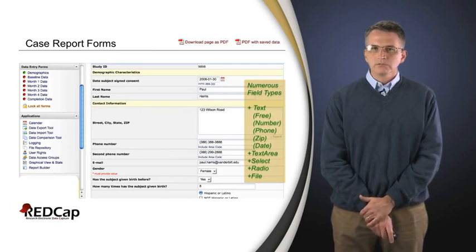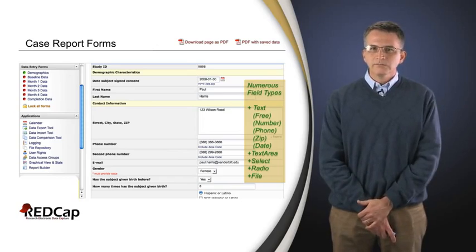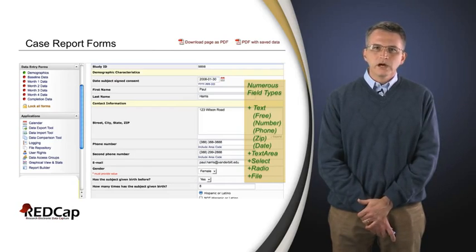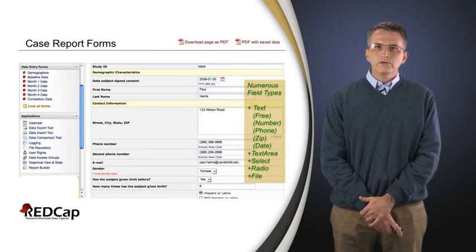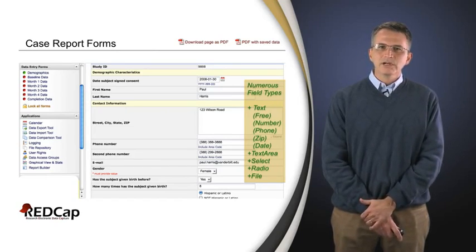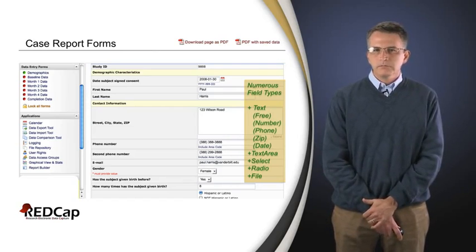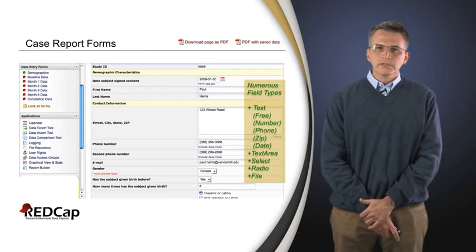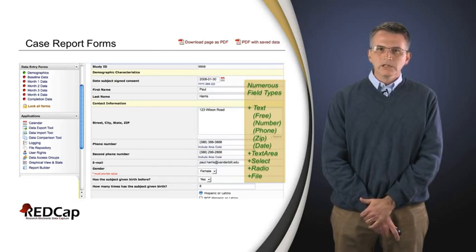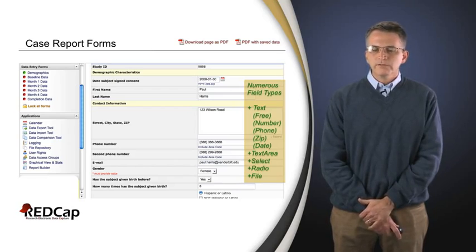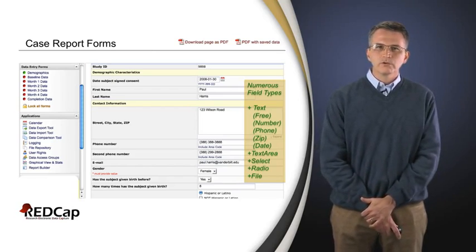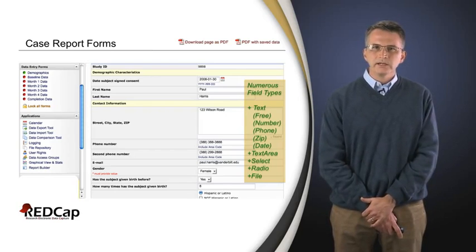Different field types — you see over on the right that we have some fields where you can just type in text. Some field types below might have areas where if you type something other than a number, phone number, zip code, or whatever, it will come back and say that doesn't look quite right. We also have places where you can enter data in a very structured way, like the pull-down list for gender or the radio buttons below. There should be a number of different ways of entering data into a case report form, but it should all be consistent and readable by the end user.